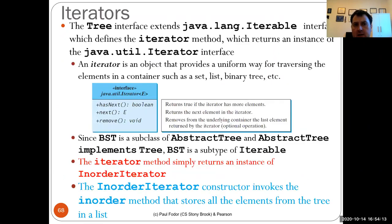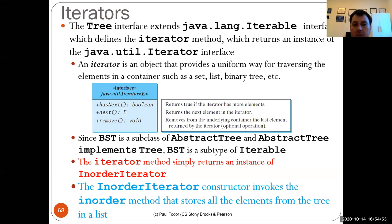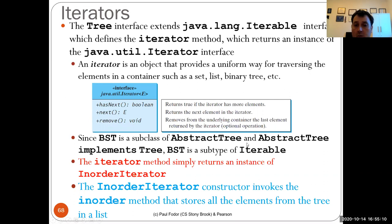Another topic not covered in detail last time is how to write iterators. The Tree interface extends java.lang.Iterable, which defines the iterator method returning an instance of the Iterator interface. The Iterator object provides a uniform way of traversing elements with hasNext (a boolean), next (the next element based on the cursor), and remove (which removes the current element while allowing continued iteration).